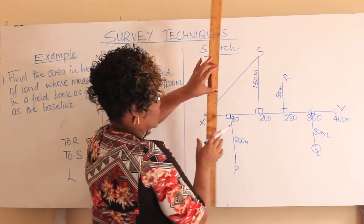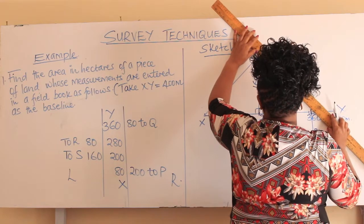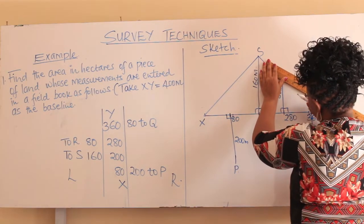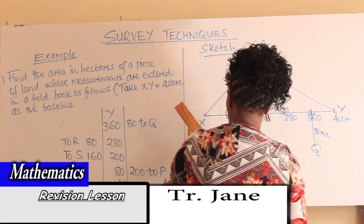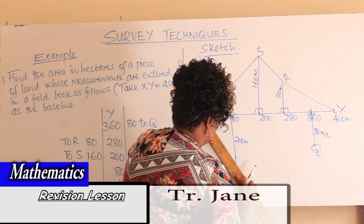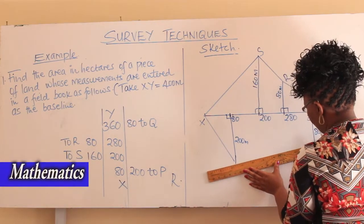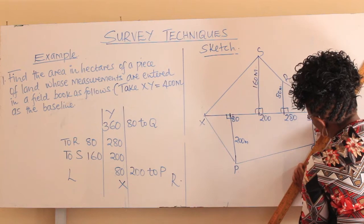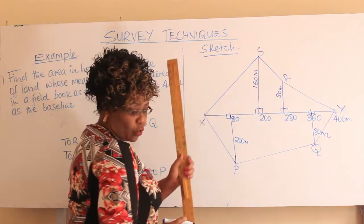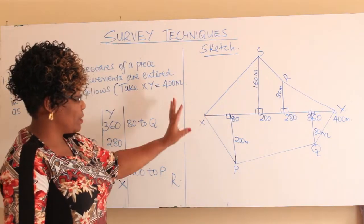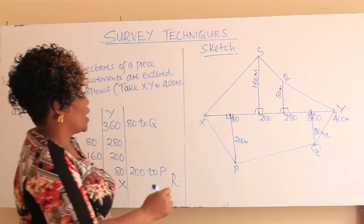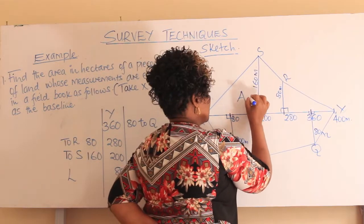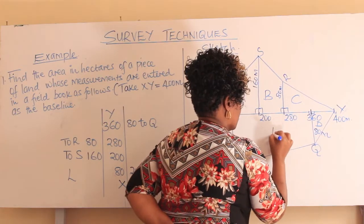Join X to R, join S to R, join R to Y. You now have your sketch of the piece of land and all the measurements are in meters. You can then label these regular plane figures as A, B, C, D, E, and F.